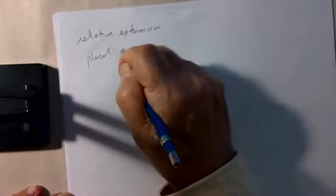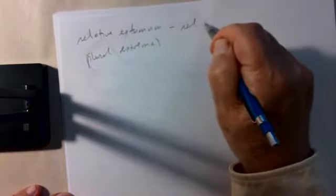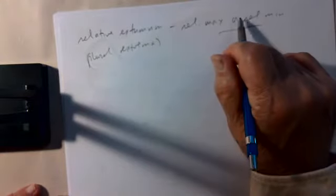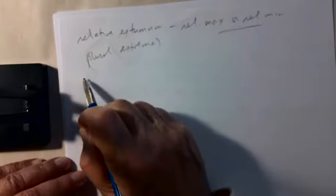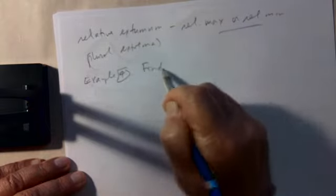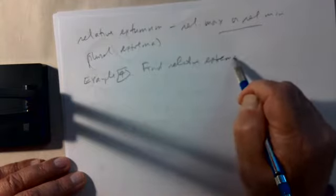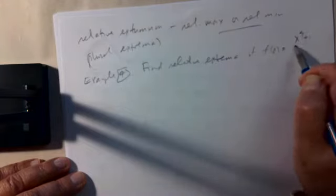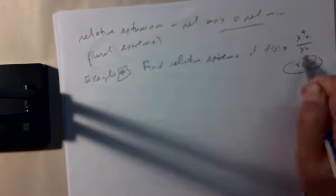A relative extremum — the plural is extrema — means a relative max or a relative min. Here's an example from the text: find the relative extrema of the function f(x) = (x⁴ + 1) / x². This function is defined for all x except zero. We can simplify: (x⁴ + 1)/x² = x² + x⁻².